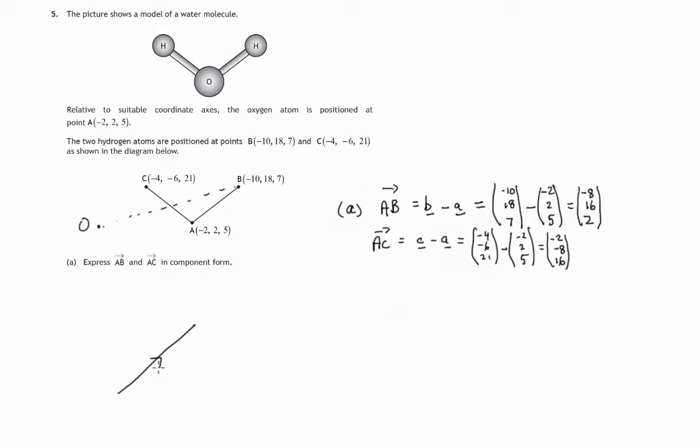So from a to b and from a to c, components of a to b, negative 8, 16, 2. Components of a to c, negative 2, negative 8, 16. And let's suppose that the angle between them is theta.